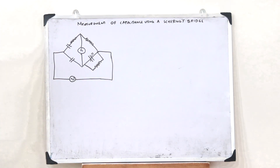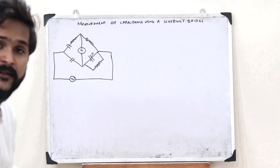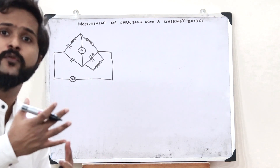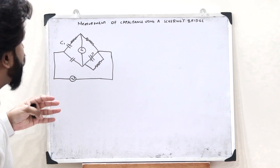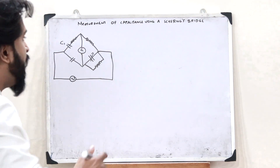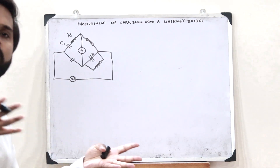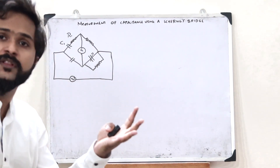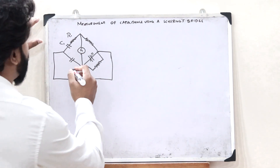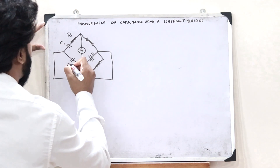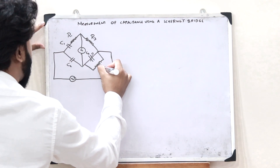This is the basic structure of what you refer to as a Schering's bridge. Using this particular Schering's bridge, we can actually find the value of an unknown capacitance. Let this be C1 — the value of the unknown capacitance that we have to find — and let this resistor be R1, also an unknown resistor. Let this capacitor be C2, this resistor be R3, this capacitor be C4, and the resistor be R4.